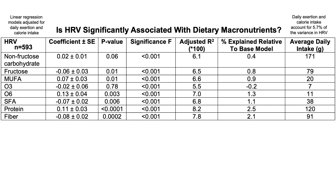The data for macronutrients and HRV, after adjusting for daily exertion and calorie intake, is based on 593 days of data. I looked at carbohydrates split into non-fructose carbohydrates and fructose, each fatty acid type — monounsaturated (MUFA), omega-3, omega-6, saturated fatty acids (SFA) — and also protein and fiber intake. The table shows the beta coefficient plus or minus standard error, the p-value, the significance F for the overall model, the adjusted R-squared, the percent of additional variance explained relative to the base model, and the average daily intake. All eight models are statistically significant with p less than 0.05.